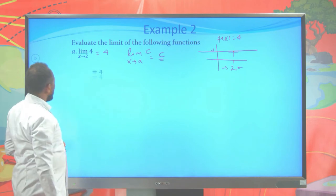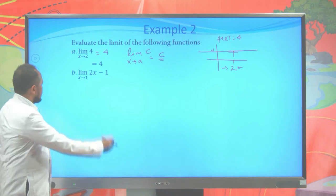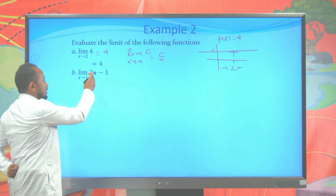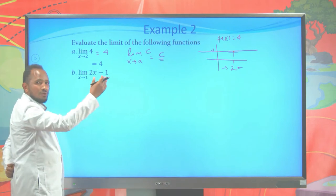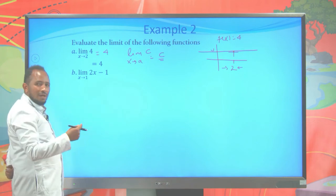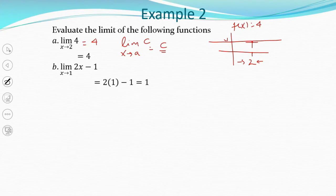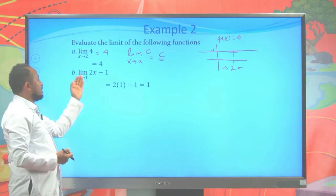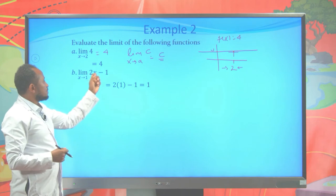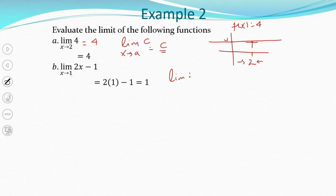Now the second example: the limit of 2x minus 1 when x approaches 1. If you take the right-side limit, approaching 1, 2 times that number is almost 2, minus 1 is 1. The left-side limit also gives 1. So the limit is 2 times 1 minus 1, which equals 1. Simply, for any polynomial function, to find the limit you can substitute the number directly. Generally, the limit of any polynomial function P(x) when x approaches A equals P(A).